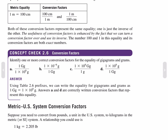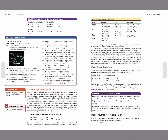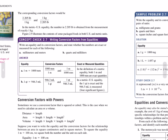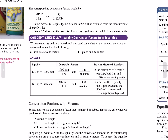Metric–US system conversion factors. Suppose you need to convert from pounds, a US unit, to kilograms in the metric or SI system. The relationship you could use is 1 kilogram equals 2.205 pounds. The corresponding conversion factors would be 2.205 pounds per kilogram and 1 kilogram per 2.205 pounds. In this metric–US equality, the number 2.205 is obtained from the measurement of exactly 1 kilogram. Figure 2.9 illustrates the contents of some prepackaged foods in both US and metric units.